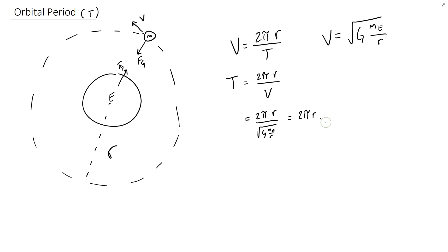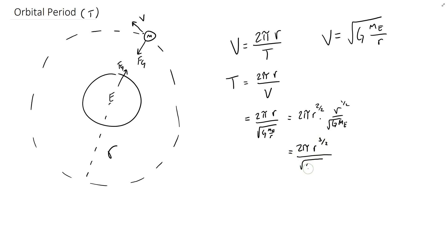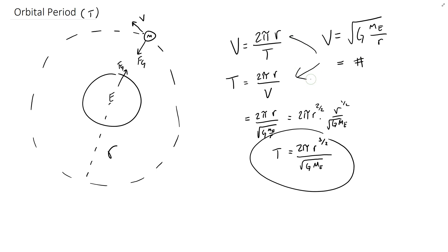Flipping the fraction inside: T equals 2πr times the square root of r over G·m_e. Since r = r^(2/2) and we can split the fraction, combining gives T equals 2π·r^(3/2) over the square root of G·m_e. This is the equation for orbital period. In practice, it's often easiest to calculate the orbital velocity numerically first and then plug into T = 2πr/v. You only need this derived form if asked to derive it or manipulate the equation.